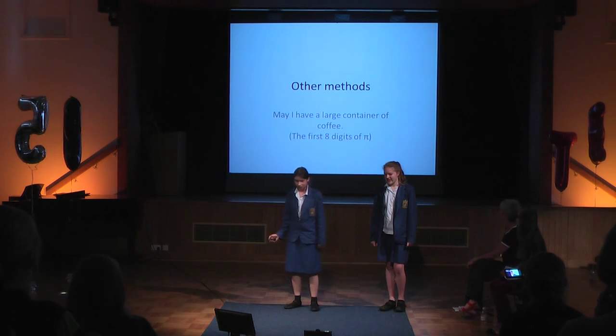Another method is using the amount of letters in a word to correspond with numbers. For example, 'May' would be three, 'I' would be one, 'have' would be four, 'a' would be one. This gives the first eight digits of pi: 3.1415926.